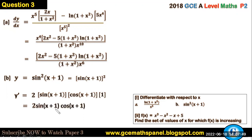So this gives us 2sin(x + 1)cos(x + 1) which is the same as sin[2(x + 1)]. So this one is the same as sin[2(x + 1)].